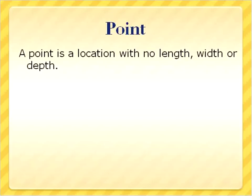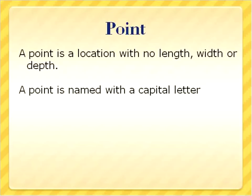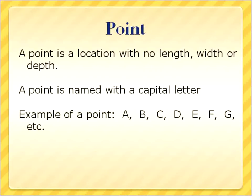First off, let's talk about a point. A point is a location with no length, width, or depth. A point is usually named and labeled with a capital letter. So you'll have a point, for example, point A, and usually you'll have not only the letter A but a small dot to indicate where that point is. So if point B were up here and point C were over here, these would be ways to label points — point A, B, C, D. Basically you're going to be labeling points with a capital letter next to the location of that actual point.